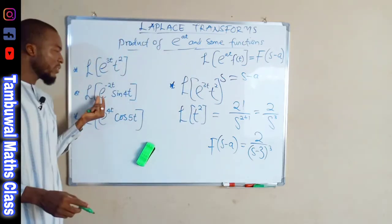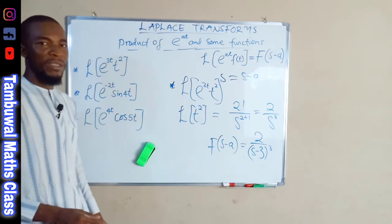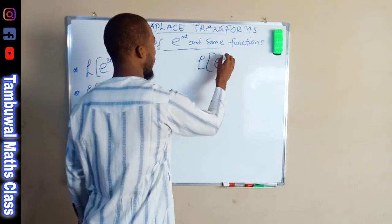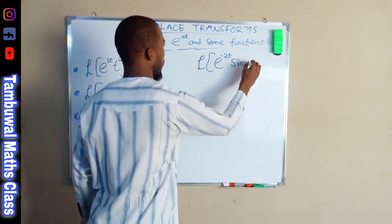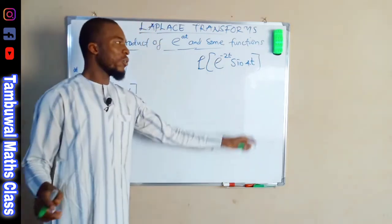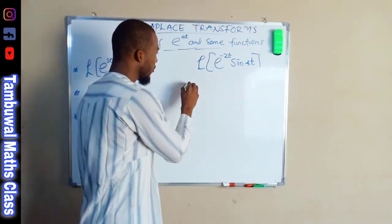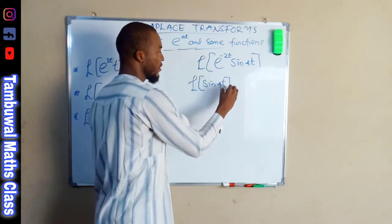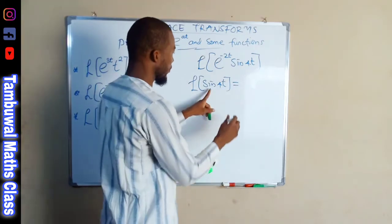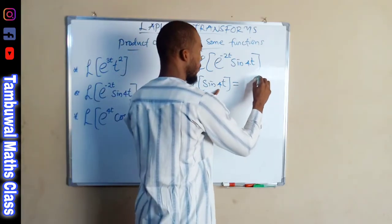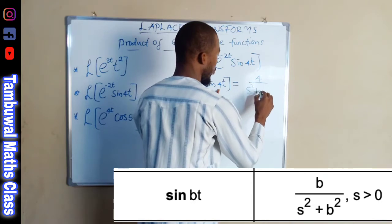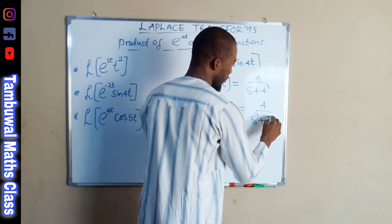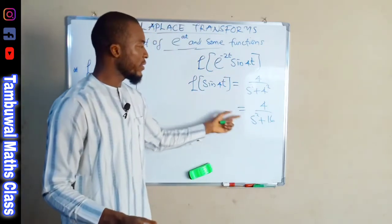Now let us find the second one: the Laplace transform of e^(negative 2t) multiplied by sine of four t. We first find the Laplace transform of sine four t, which equals four divided by s squared plus four squared, giving us four over s squared plus sixteen.